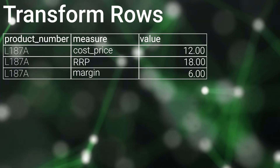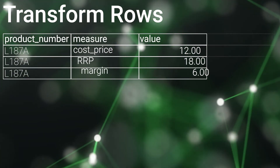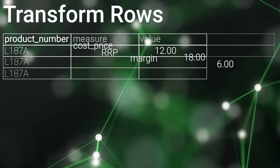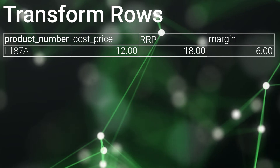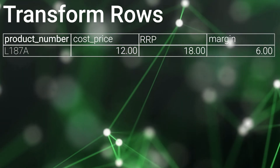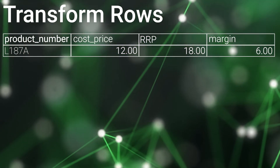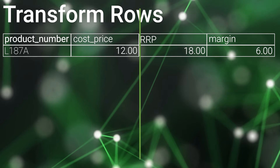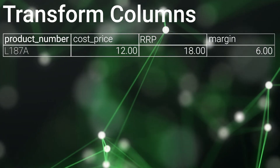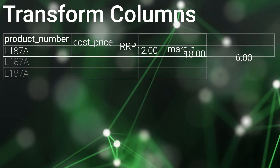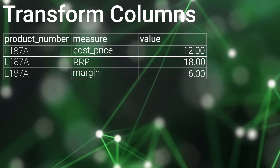In this example, we'll be using the Transpose Rows component to transform a table of product data so we can see an item's price breakdown pivoted into separate columns. Then, using the Transpose Columns component, we'll reverse the process to transpose the separated columns back into separate rows of product data.